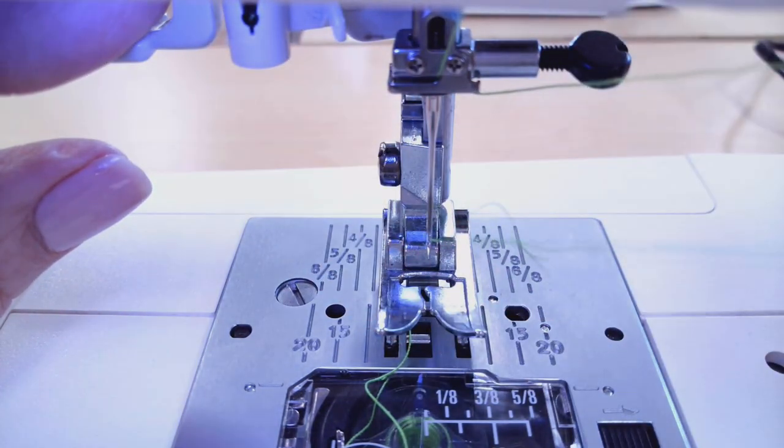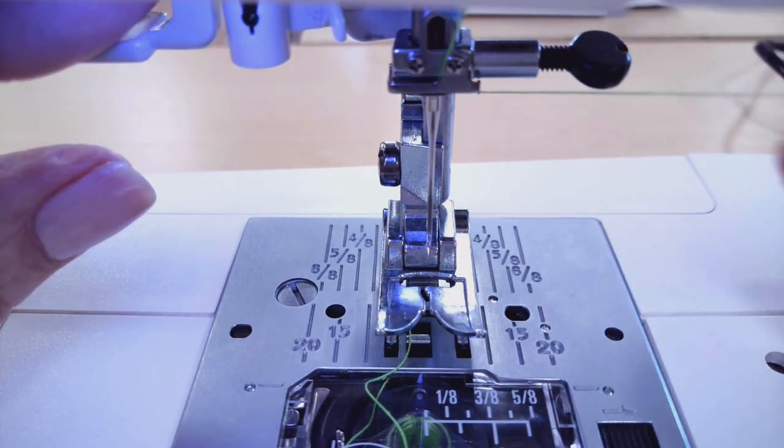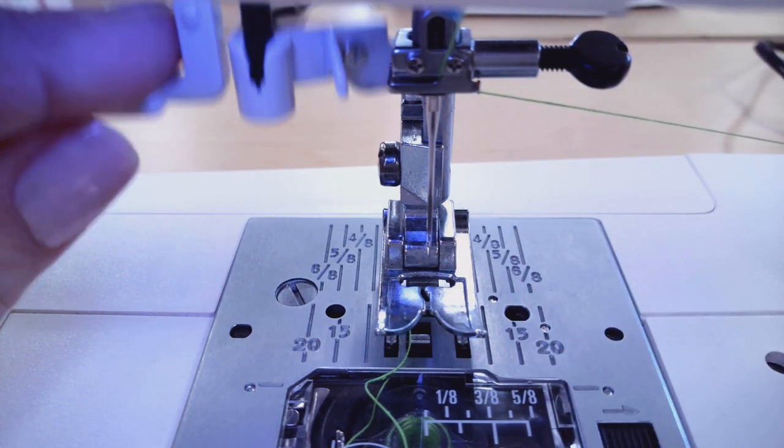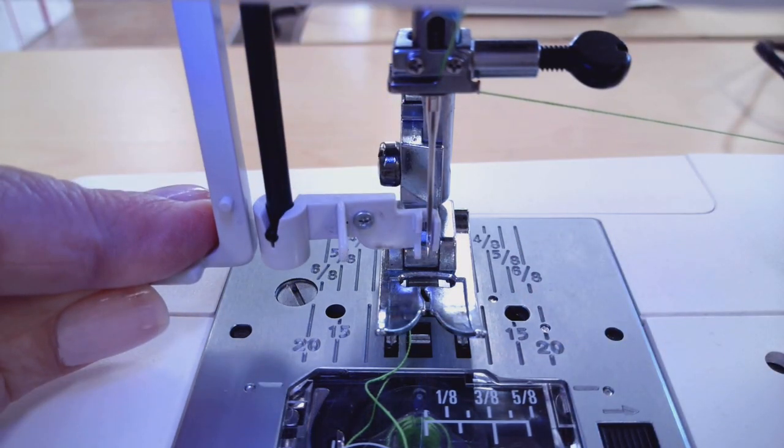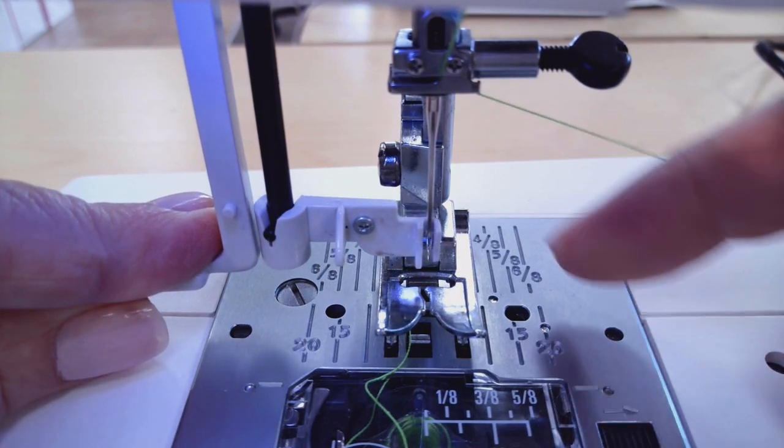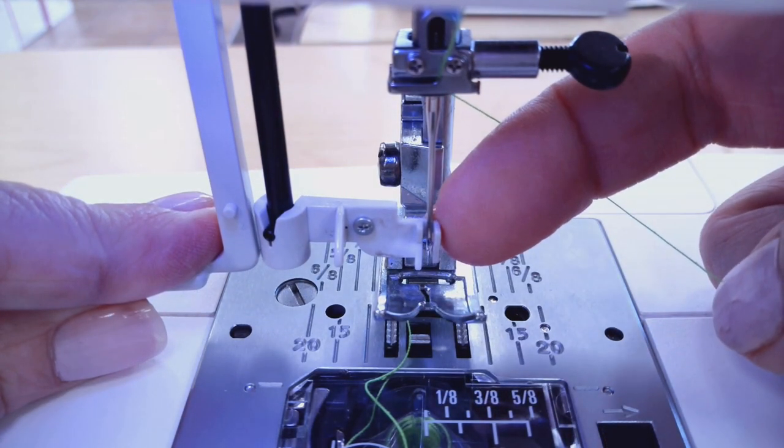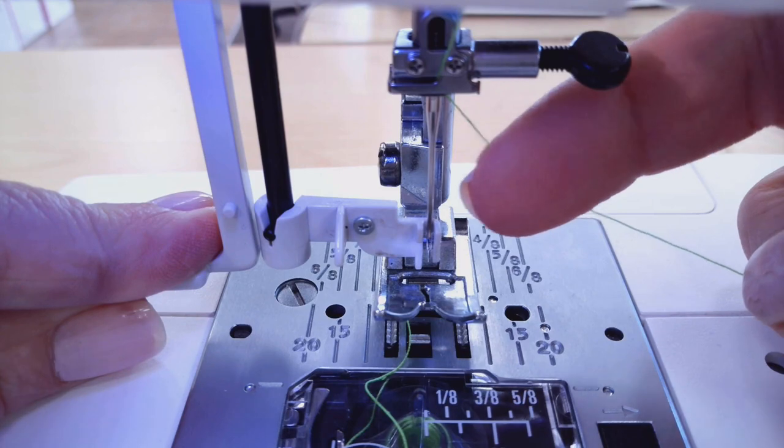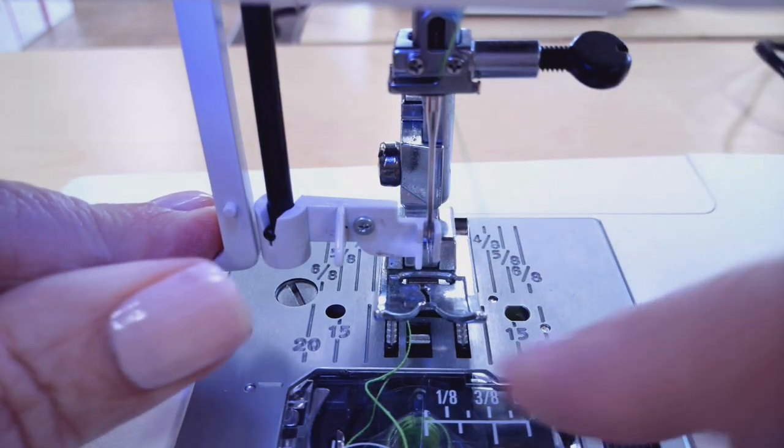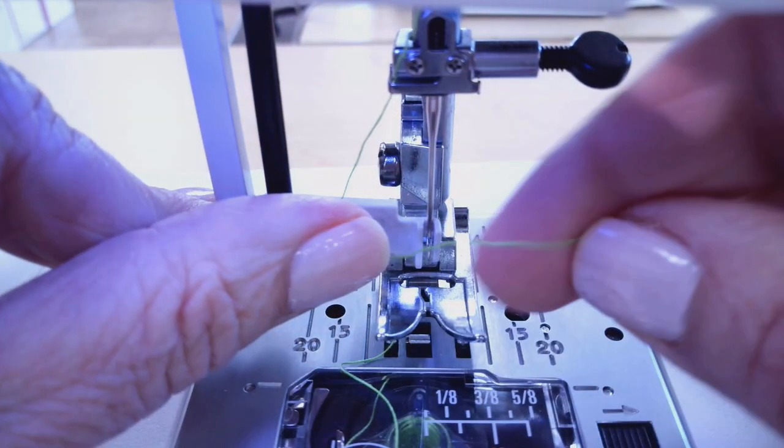So there's a couple of little things that you'll want to pay attention to depending on the way your needle threader works. When we pull this down we want to be sure that it swings all the way forward so that the little hook that goes through the eye of the needle can come all the way forward and you'll be able to catch it with that thread.